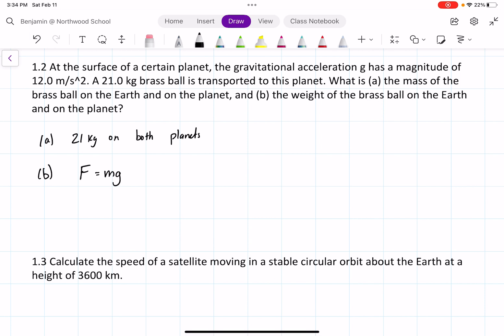So for the first one, on the new planet, we have F equals, it's going to be 12 times 21, which just gives us 252 newtons. And then for the force on Earth, we get 21 times 9.8, which gives us 206 newtons.